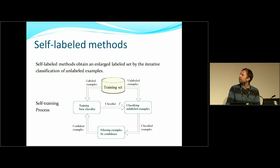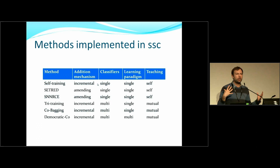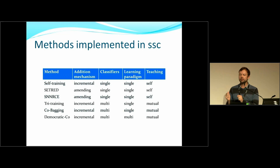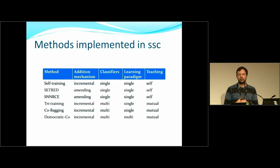What I just explained is the standard vanilla self-training: a single classifier, one learning paradigm, teaches itself in an incremental way. The downside is there's no way to remove instances from the training set — if early on the classifier made mistakes, that noise stays in the training set. One method in the package called SETRED uses an amending mechanism that can also remove instances if they appear to be outliers, making it more flexible.